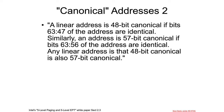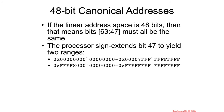From Intel's 5-level paging paper: a 48-bit address is canonical if bits 47 through 63 — zero-indexed — are all identical; they all have to be 0 or they all have to be 1. Same thing with 57-bit: bits 56 through 63 have to be all identical.